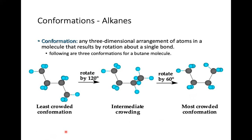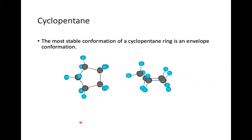The conformation of alkanes involves three kinds of arrangements of atoms in a molecule. Because they rotate about a single bond — rotating by 120 degrees or 60 degrees — there are least crowded, intermediate crowding, and most crowded conformations. You need to remember how many degrees and what type of conformation is formed when they twist and rotate.